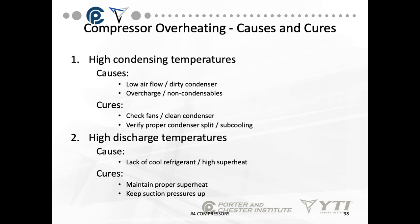High condensing temperatures are caused by low airflows, dirty condensers, overcharging, and non-condensibles. Cures include checking fans, cleaning the condenser, and verifying condenser split and sub-cooling. Non-condensibles show up as gauge fluttering and unexplained pressure increases on the high side. High discharge temperatures are caused by lack of cool refrigerant — high superheat. Maintain proper superheat and keep suction pressures up within design temperatures.